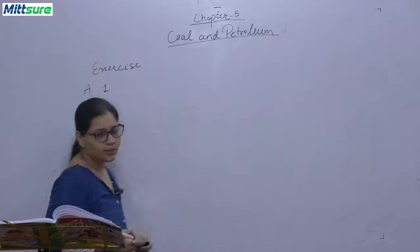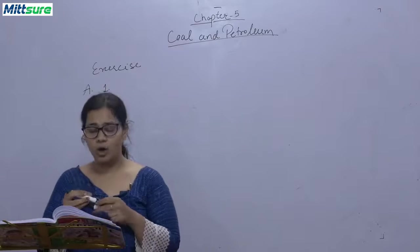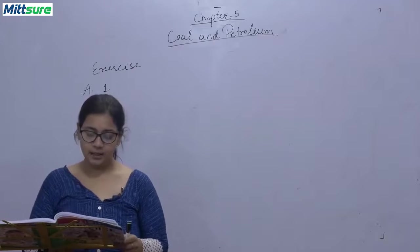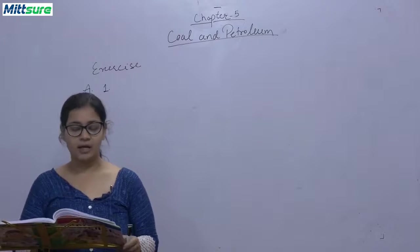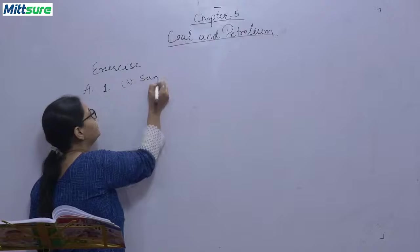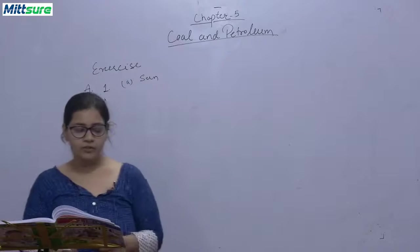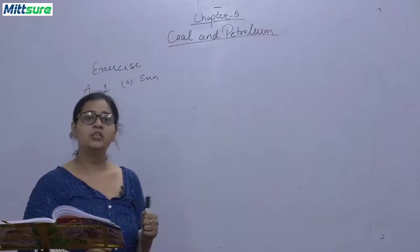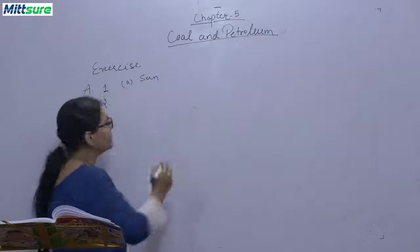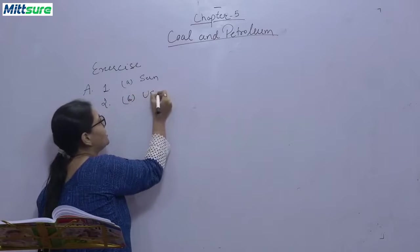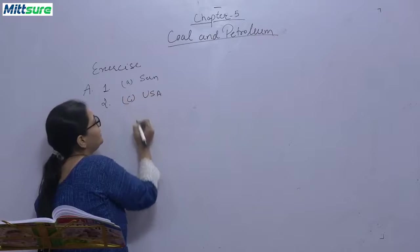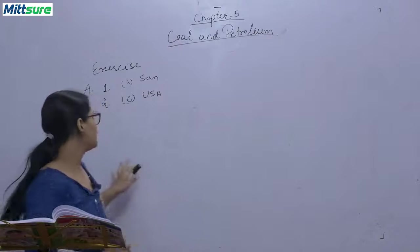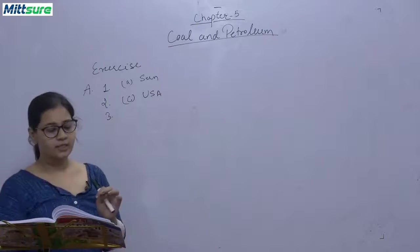First we will discuss question A, that is read the following questions carefully and tick the right option. First question: who provides heat and light to the earth? Options are A sun, B moon, C candle, or none of these. The answer is A sun. Second, which country has the largest reserve of coal? A Russia, B India, C USA, D China. The answer is C USA. USA has highest reserve of coal.